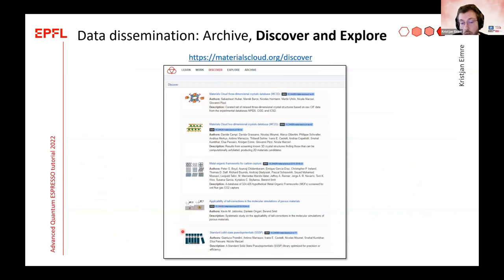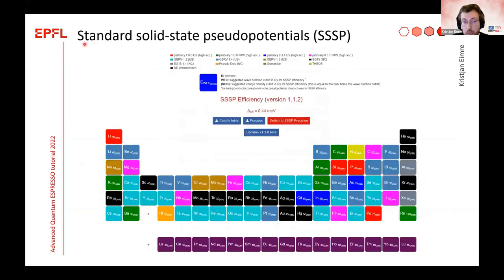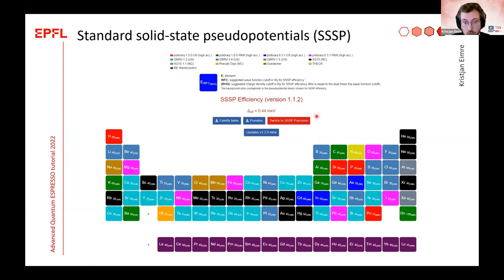That was just one Discover section. Materials Cloud contains many other Discover sections. Another one worth mentioning briefly is the Standard Solid State Pseudopotentials Discover section. This is a collection of pseudopotentials where for every element there is detailed benchmarking, and the best pseudopotential library is chosen for every element. In this interface you can click on every element and see the detailed benchmarking results.